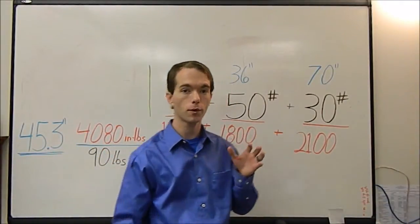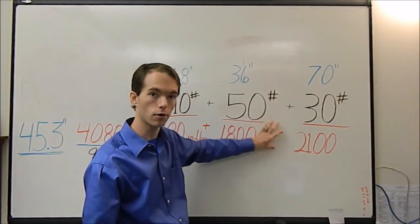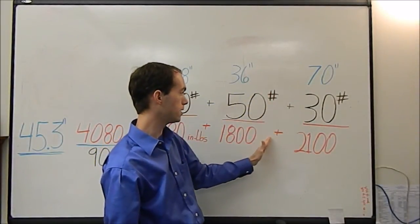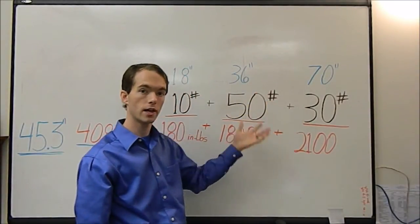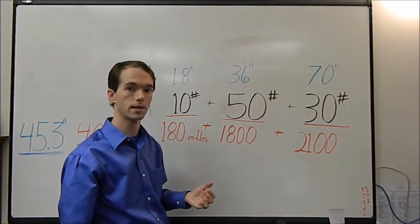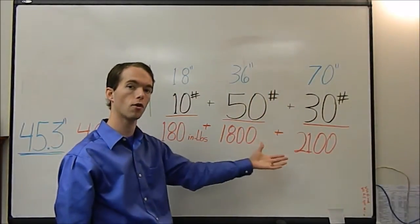So 45.3 inches, what this tells us is that somewhere right in here at 45.3 is where all this mass could be considered to be concentrated. So that's how you find the center of mass of something. It's simply the sum of the moments, which is force times distance, over the sum of all the masses or forces.